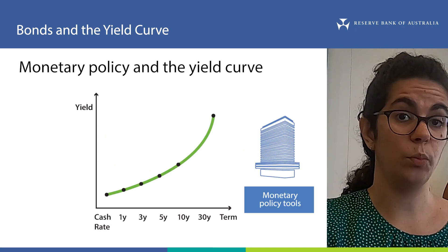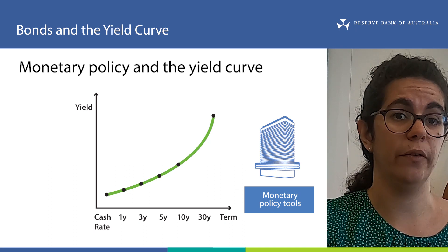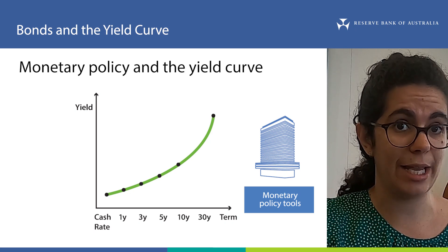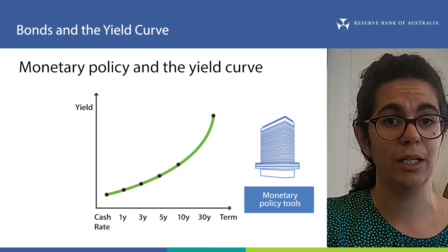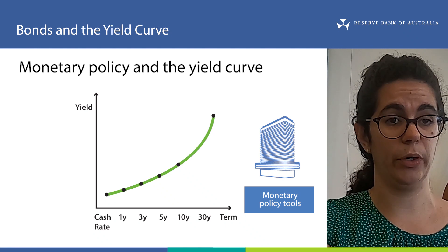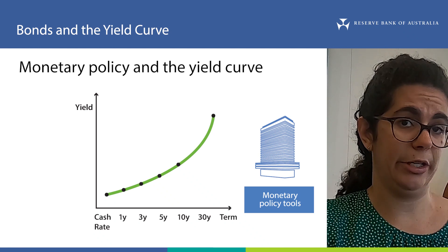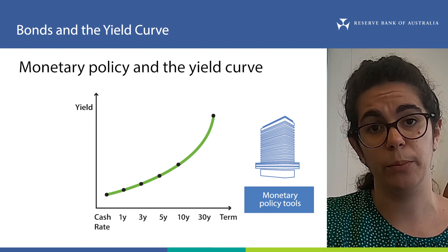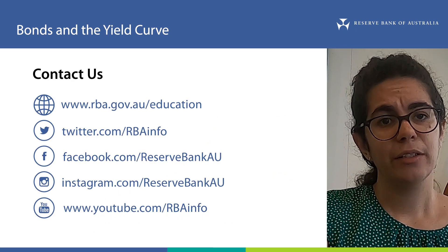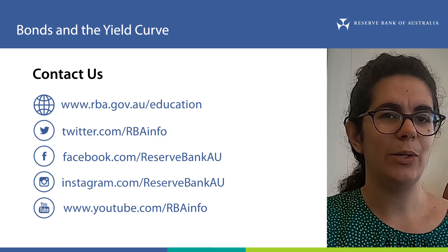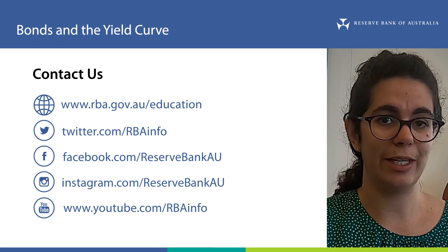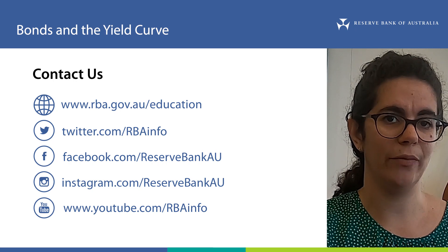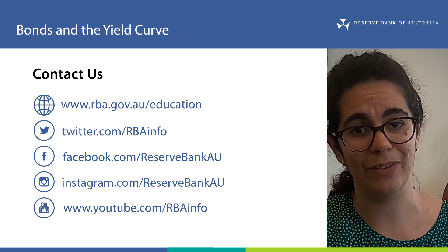Several monetary policy tools work through their effect on the yield curve. For example, changes in the target for the cash rate — which affects both today's cash rate and the cash rate investors expect in the future — tends to shift the level of the yield curve up and down. Other monetary policy tools also work by moving the level of the yield curve or by changing its slope. That's everything we need to cover on this topic. If you want to learn more, see our explainer on bonds and the yield curve on the RBA website. Thank you for listening.